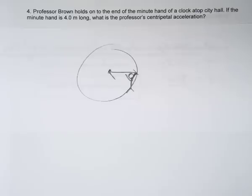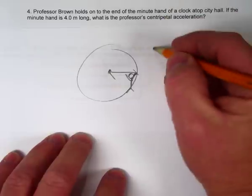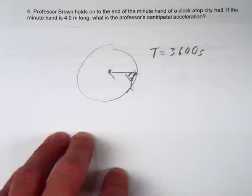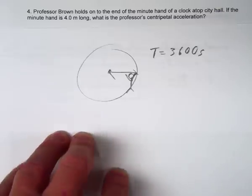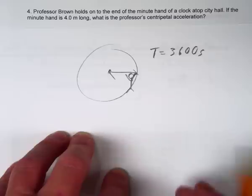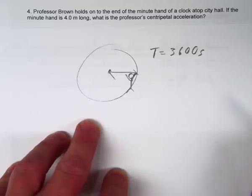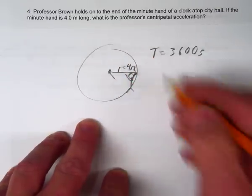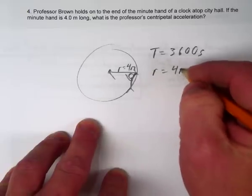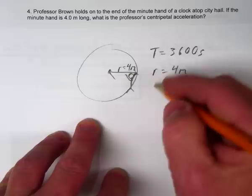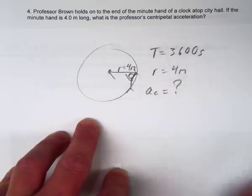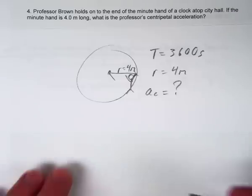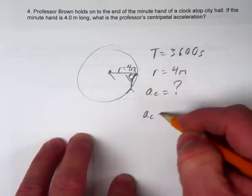So I know the period is 3600 seconds - that's how many seconds are in an hour. 60 minutes times 60 seconds gives 3600. Then the problem states that the radius is four meters. So I have T = 3600 seconds and r = 4 meters, and it asks for the centripetal acceleration.